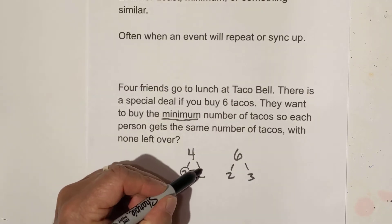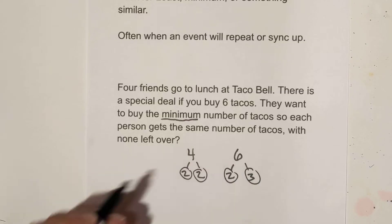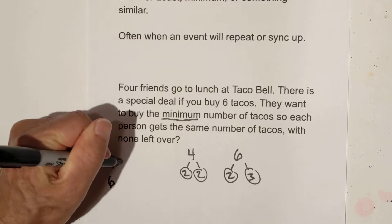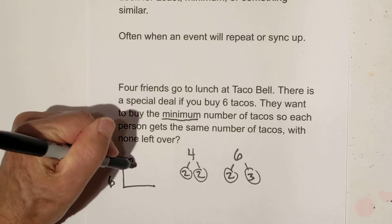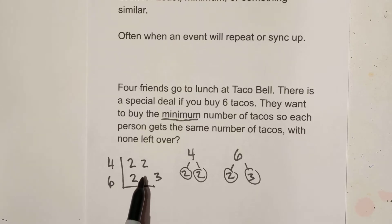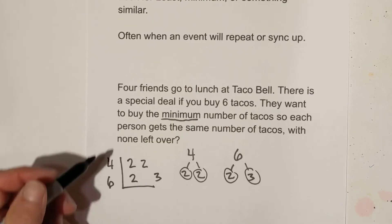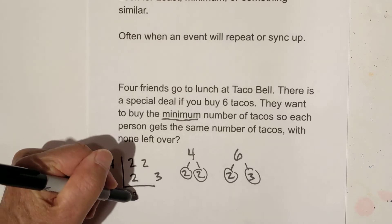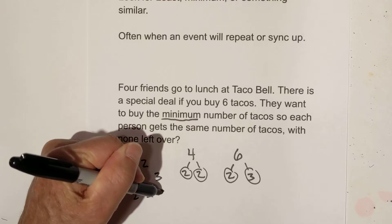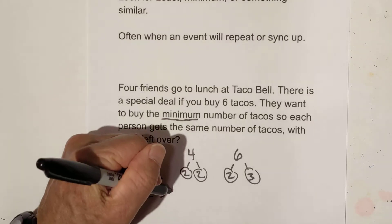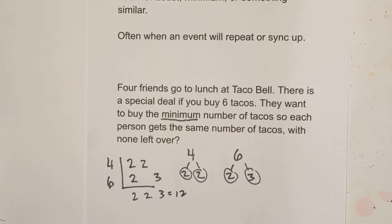We're down to prime numbers with the factor tree. Then I use this little chart — it's a lifesaver. I put the factors of four and the factors of six. Notice I skipped the two because I don't have a two there. The rule for the LCM is: if you have two numbers in a column, just bring down one. Otherwise, bring all the numbers down. So two times two is four, and four times three is twelve.